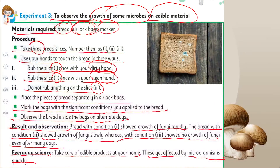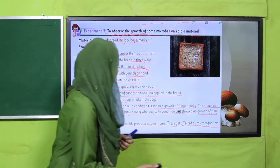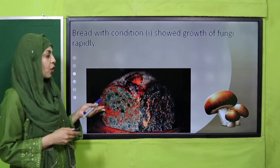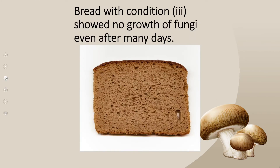So we will find different conditions: bread number one will show rapid growth, bread number two will show slow growth, and bread number three may show very small or no growth for many days. This tells us that we should take very good care of the things at home. Bread number one will show the most growth, bread number two will show very small slow growth, and bread number three will remain safe without any growth of microbes.